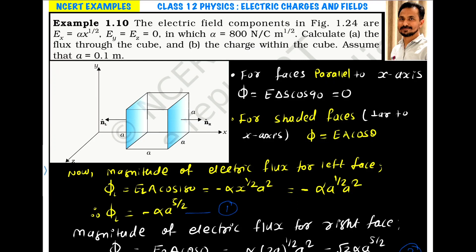Example 1.10. The electric field components in figure 1.24 are Ex = α x^(1/2), Ey = 0, Ez = 0, in which α = 800 N/C·m^(1/2).